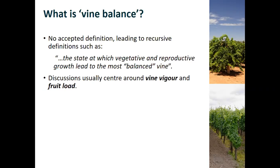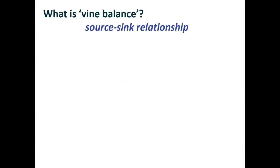We were asked to look at that. In terms of what vine balance is, there's no accepted definition. You can even search online and come up with recursive definitions such as 'vine balance is the state at which vegetative and reproductive growth lead to a balanced vine,' which I don't think is particularly helpful. However, if you talk to growers, winemakers or others in the industry, that discussion will focus around the relationship between some measure of vigour of the vine and the yield or the fruit load on that vine.